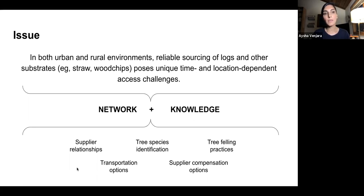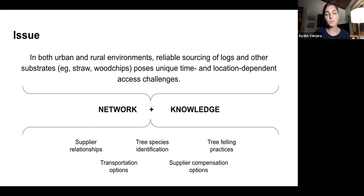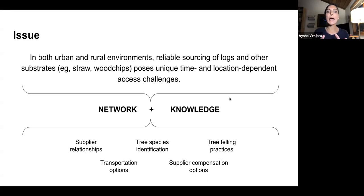There are unique time- and location-dependent access challenges. By time, we mean weather-dependent — for logs, there's a small window. You could be cutting trees all year, but the best time is in colder months when there are fewer chances of contamination. That window to get your best logs and then inoculate them — which happens in the few months after — because you need fresh logs for a successful inoculation. All these challenges ladder up to bigger issues of network and knowledge.